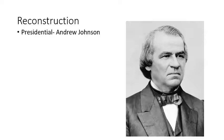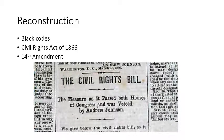Most Southern states accepted Johnson's modest requirements, but several objected to one or more of them. When Johnson ordered special congressional elections in the South in the fall of 1865, an all-white electorate voted many prominent Confederate leaders back into American-held offices. On top of that, in late 1865, these newly elected Southern legislatures revised their antebellum slave codes and greatly expanded Black Codes.